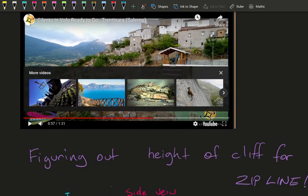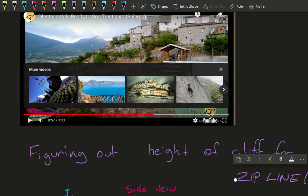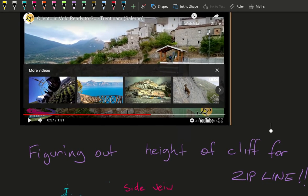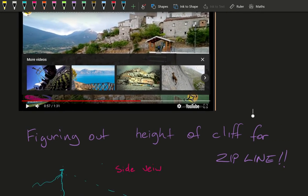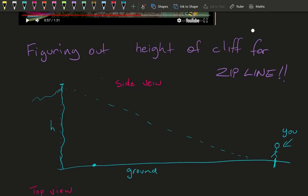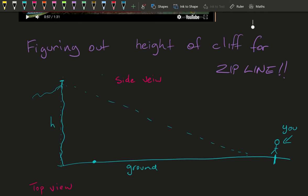Okay, so we're going to try and figure out the height of a zip line for, well the height of a cliff for a zip line. So this is my first wonderful drawing. There is you standing, looking up at the cliff from a distance away. We don't know how far the distance is and we don't know how high the cliff is. So we really don't have a lot of information at this stage.